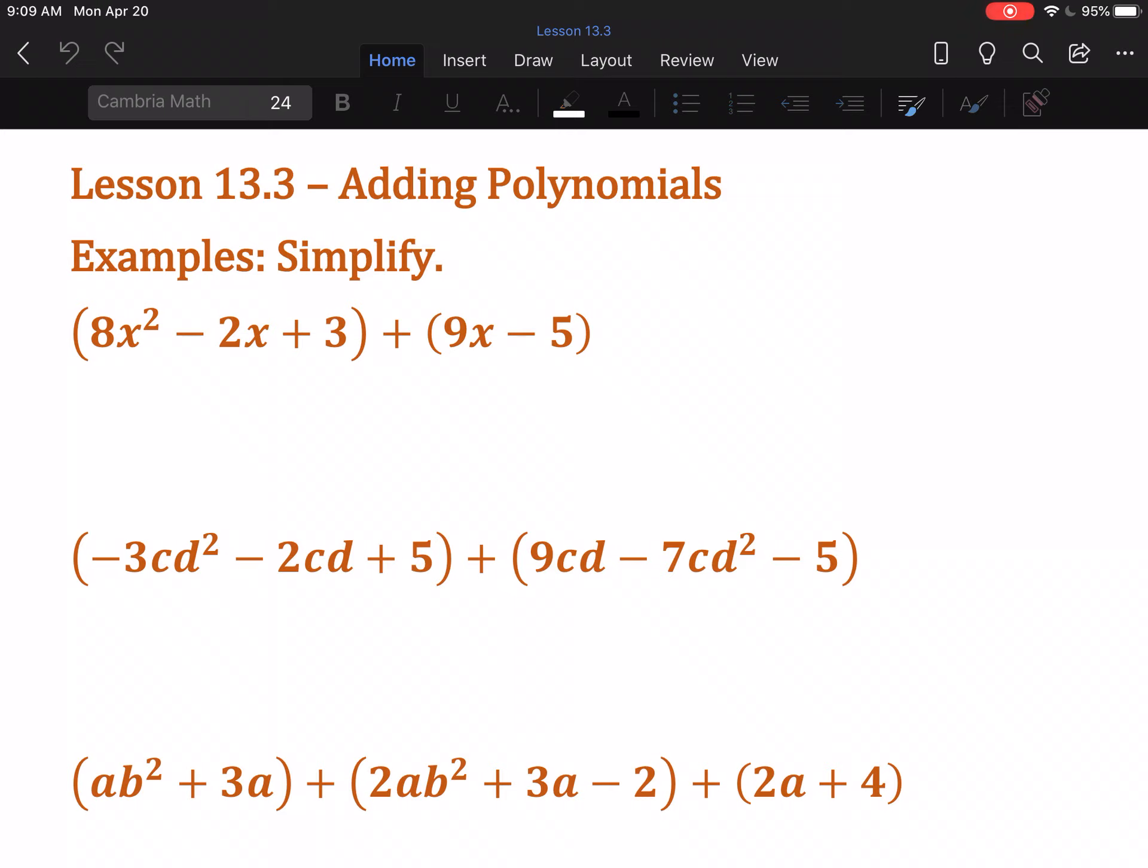You're going to see a lot of parentheses in this section, and they are merely to separate the polynomials. For example, this first example is telling us to take the trinomial 8x² - 2x + 3 and add the binomial 9x - 5.